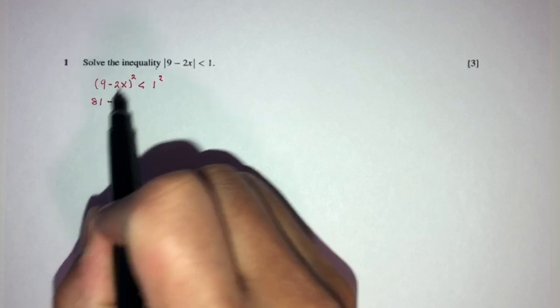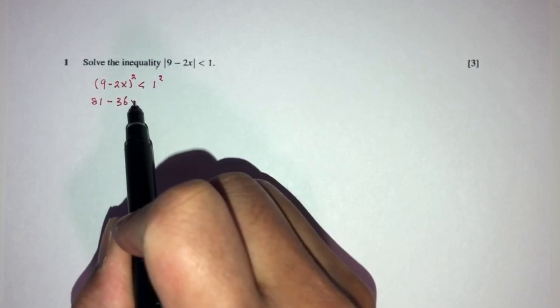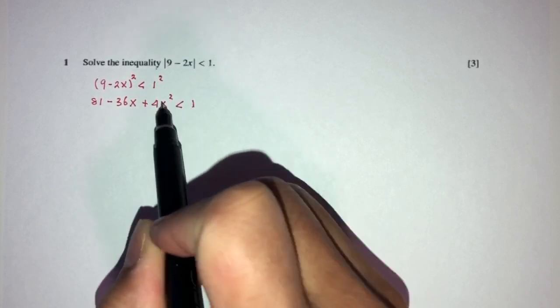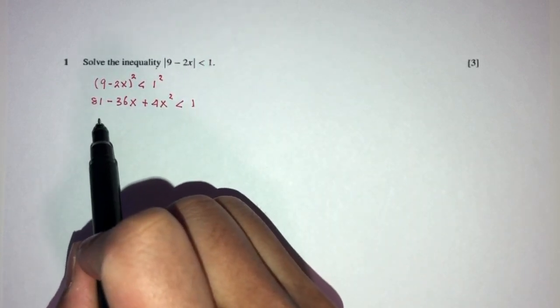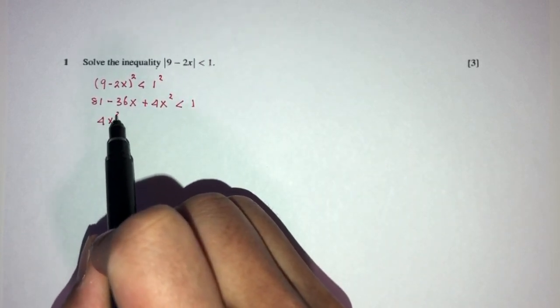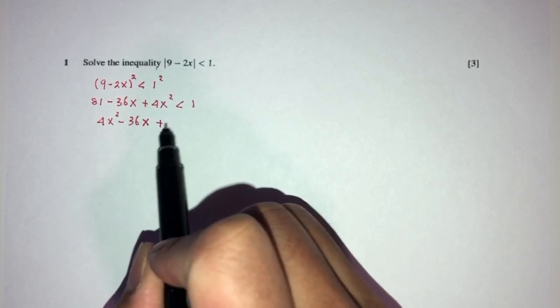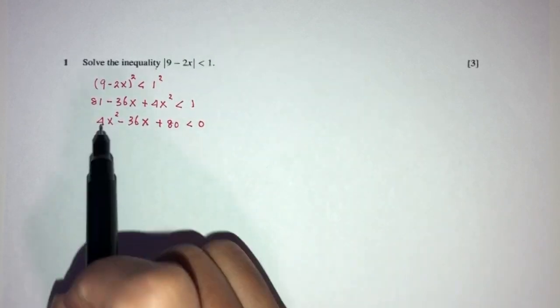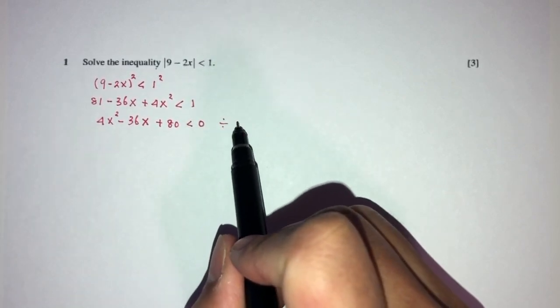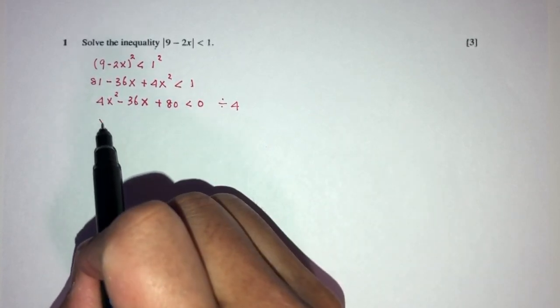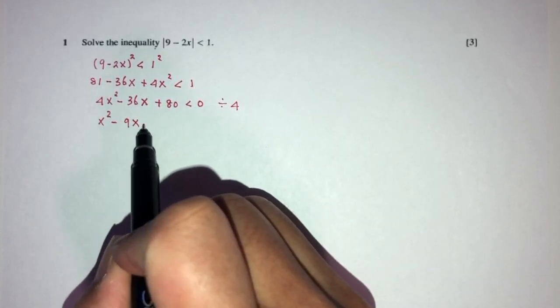Now we have to simplify. You will have 81 minus 36x plus 4x squared, less than 1. We have to rearrange — sending the 1 over gives us 4x squared minus 36x plus 80 less than 0. Now since everything is even, we can divide by 4 to simplify the equation. You will have x squared minus 9x plus 20 less than 0.